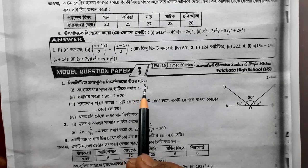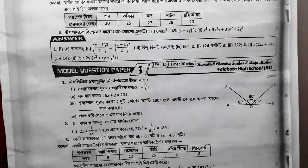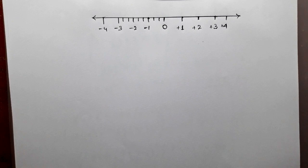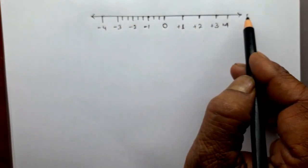This is the first question. This is minus 8 by 3.